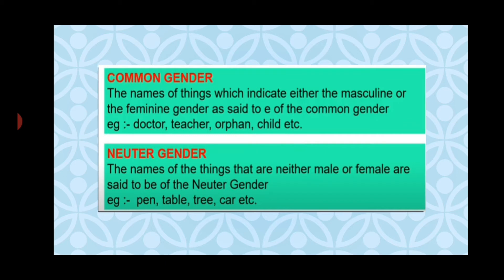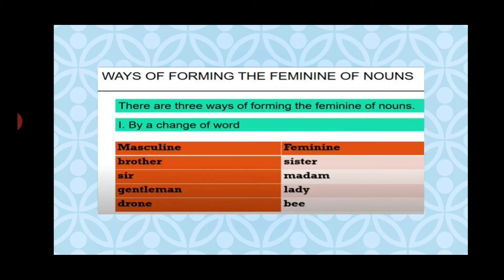Neuter gender denotes non-living things: pen, table, tree, car, etc. Now let us look at the ways of forming the feminine of nouns. There are three ways. First, by a change of word — for example, the masculine 'brother' changes to 'sister'; 'sir' becomes 'madam'; 'gentleman' becomes 'lady'.